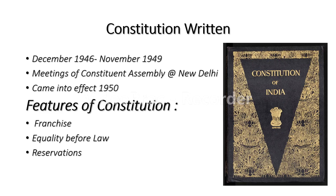The meetings of the Constituent Assembly were held in New Delhi, and the Indian Constitution was adopted on 26th January 1950. The first feature of the Constitution was the adoption of Universal Adult Franchise, meaning voting power to all Indians. All Indians above the age of 21 had the right to vote in state and national elections.